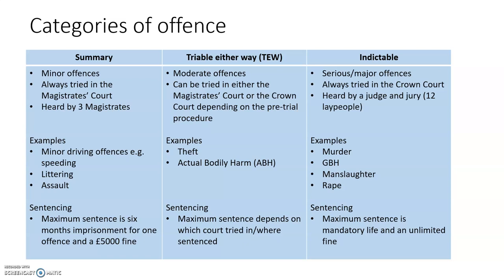Summary offences are minor offences and always tried in a Magistrates' Court. They'll be heard by three magistrates, although sometimes very minor offences can be heard by a single magistrate, such as driving offences. Examples include minor driving offences (e.g. speeding), littering, assault, and many other minor offences. The maximum sentence is six months for one offence and a maximum £5,000 fine, although sentencing will vary depending on the offence.